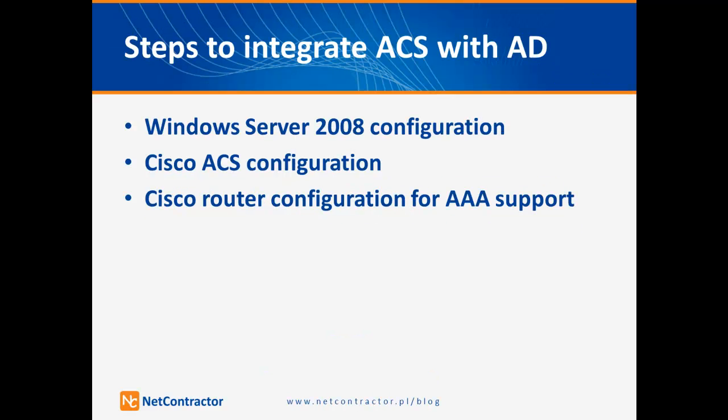Here are three main steps that need to be done to successfully achieve connectivity between ACS and AD. I will present how to configure Windows Server 2008, how to configure ACS to support Active Directory, and we will test the whole environment based on a Cisco router where I will configure AAA support.